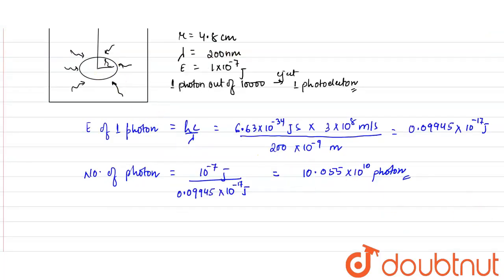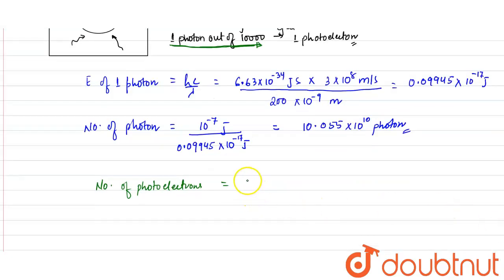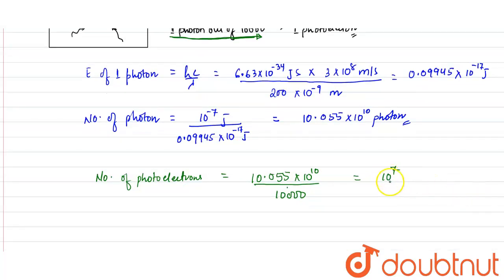This is the total number of photons incident on the surface. Since 1 out of every 10,000 photons ejects a photoelectron, the total number of photoelectrons equals the total number of photons, 10.055 × 10¹⁰, divided by 10,000. From here we get the total number of photoelectrons, which comes out as 10⁷. This many photoelectrons will be ejected from the surface.